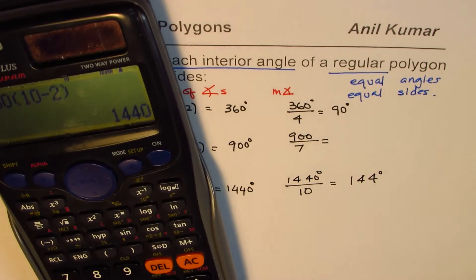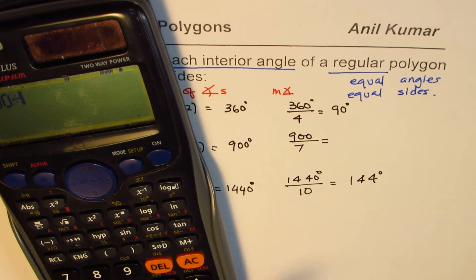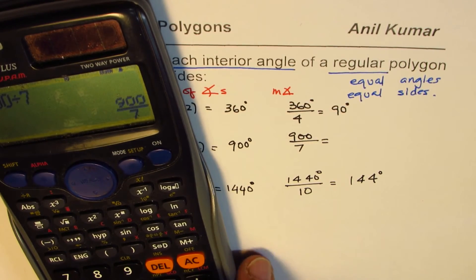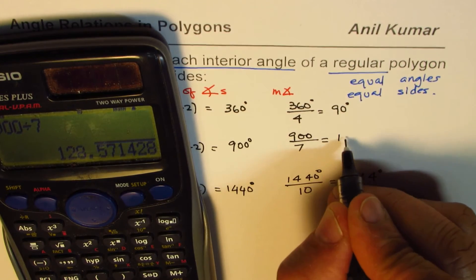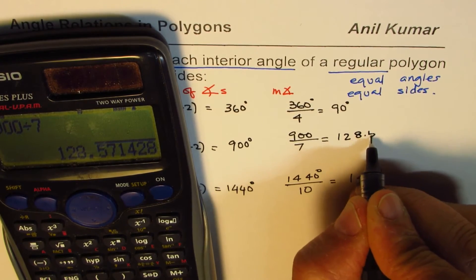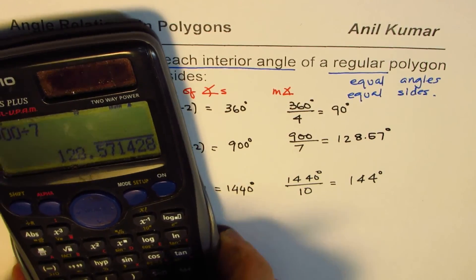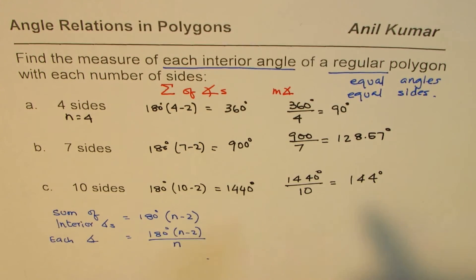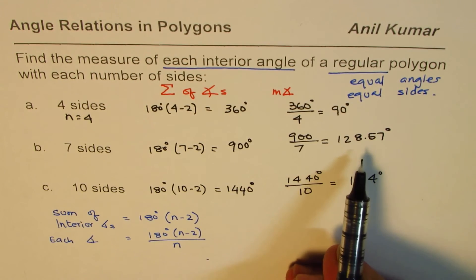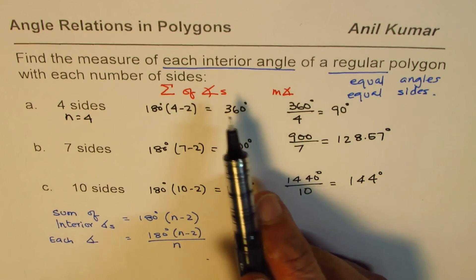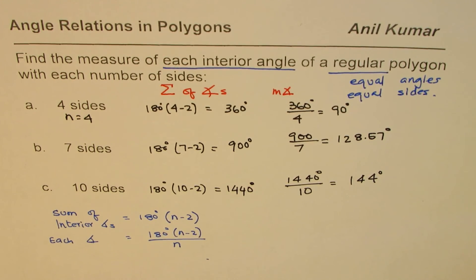And this one will be, let's use calculator, 900 divided by 7 equals to, in decimals, 128 point 57 degrees. So, that is how you can get each angle of a polygon, each interior angle of a polygon.